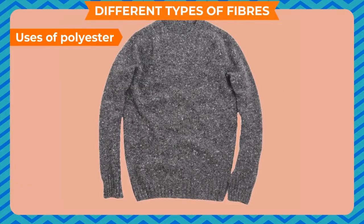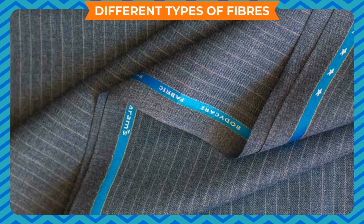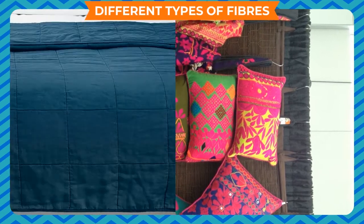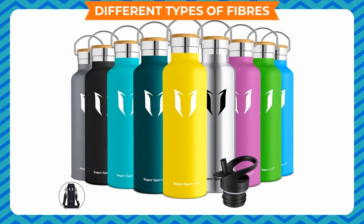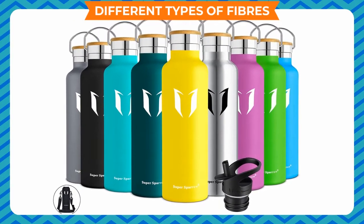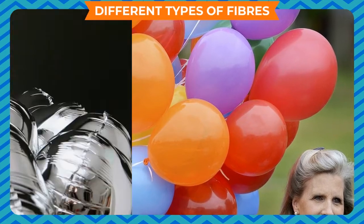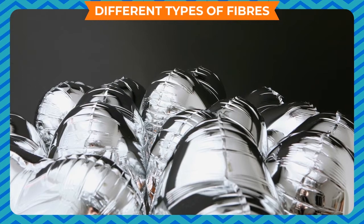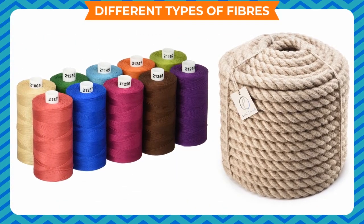Uses of Polyester: Polyester is used in the manufacture of all kinds of clothes and home furnishings like pillows, bedspreads, carpets and curtains. It is used to make PET bottles that store beverages. Polyester is used in making balloons — Mylar is a kind of polyester film used for this. It is also used to manufacture high-strength ropes and threads.